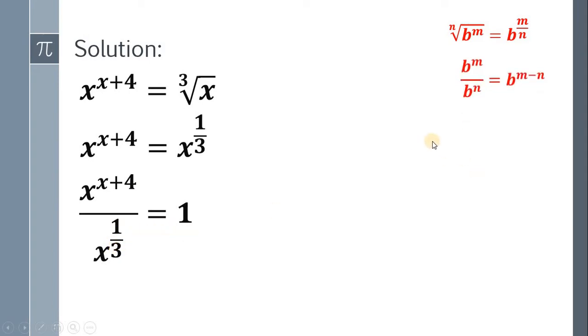Using laws of exponents, if we have b raised to m all over b raised to n, it equals b raised to m minus n. So this becomes x raised to x plus 4 minus 1 third. And 4 minus 1 third gives us 11 over 3. So our equation becomes x raised to x plus 11 over 3 equals 1.